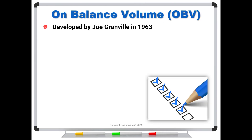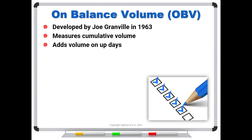On Balance Volume was developed by a guy named Joe Granville back in 1963. Computers were not real prevalent, and we don't have all of the fancy technicals that we do today. A lot of the indicators from back then were all done by hand, so they tended to be on a simpler level. What this one does is it just measures cumulative volume — we're just going to keep a running total. Up days give us positive volume, down days give us negative, and we're just going to tabulate it. It adds volume on the up days and subtracts volume on the down days, just keeping a running balance or a cumulative total.